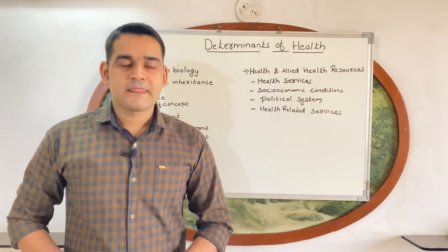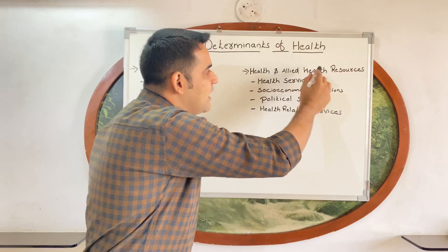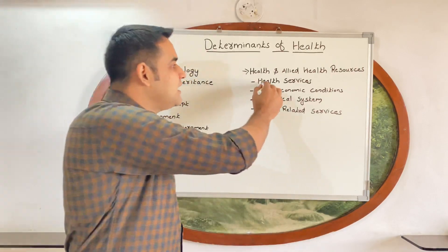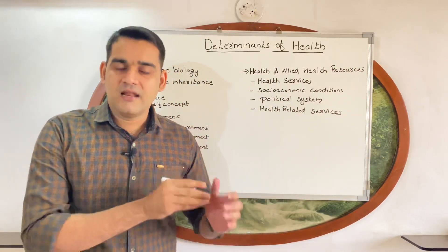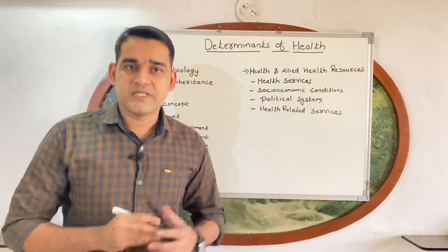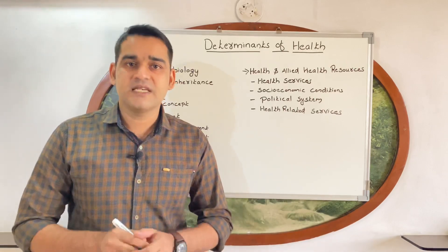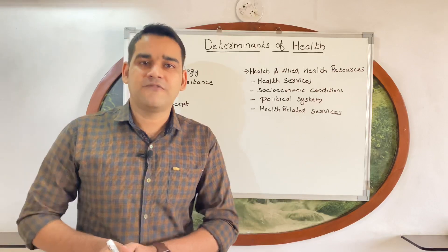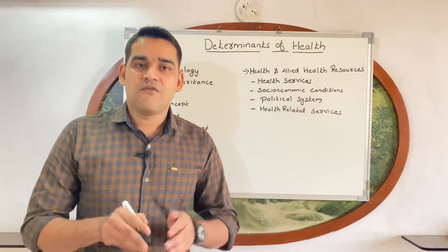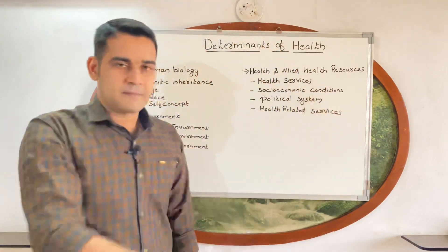The next main heading is health and allied health resources — that is, health and associated health resources. The first is health services. Health services influence the health of a person or community through the availability of hospitals, quality of doctors and nurses, and good supply of medicine. If these are properly available, people will become healthy. Lack of treatment leads to illness and death. So health services play a vital role in influencing health status.